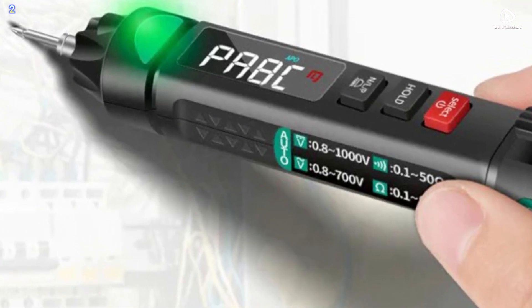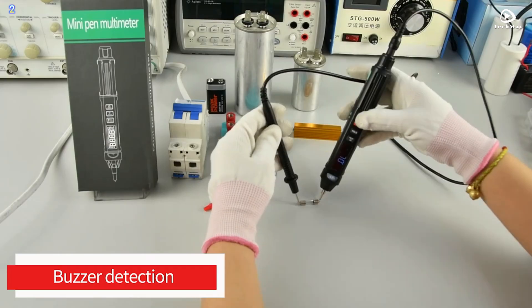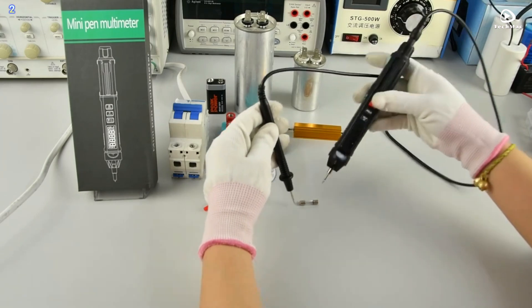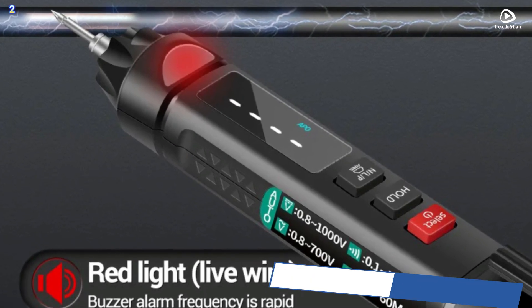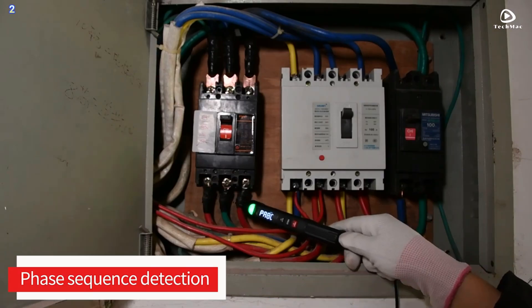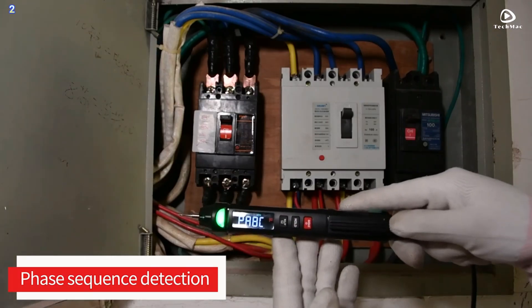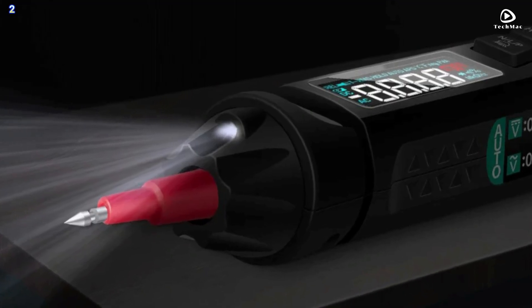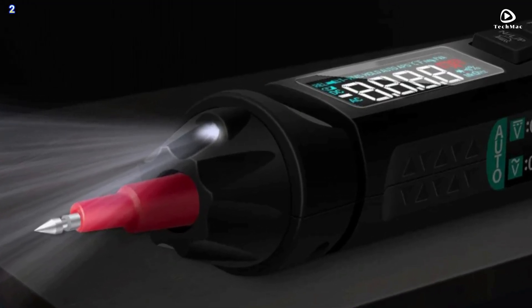DC voltage: the normal voltage is about 9 volts. In this case, there is electricity. Hertz: measure the AC voltage-hertz frequency of the air switch. Diode: switch the diode gear, auto-ranging to measure the diode value. Resistance: auto automatically recognizes and measures resistance.